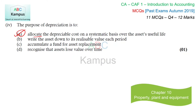Writing the asset down to its realizable value is not the purpose of depreciation — that is done for inventory under the prudence concept. Accumulating a fund for asset replacement is also not the purpose, and it does not fully happen because asset values may increase over time. Recognizing that assets lose value over time — yes, assets may lose value, but for that we have the impairment concept. Depreciation is simply the allocation of the depreciable amount in order to apply the matching concept.